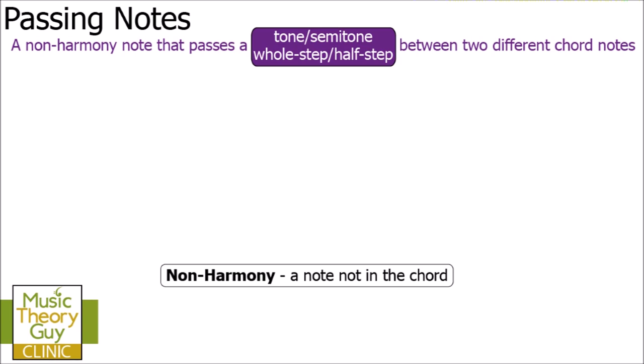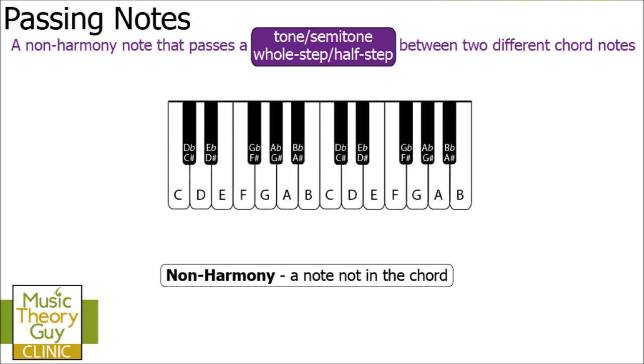Here is my keyboard and I've highlighted the note C, and here's the note D in green. It's essential you understand they are not next to each other — there's a black note in between, D-flat or C-sharp. When notes on the keyboard are next to each other they are the smallest possible interval, which we call a semitone. C to D-flat is a semitone, then D-flat to D is another semitone, and two semitones equal a tone.